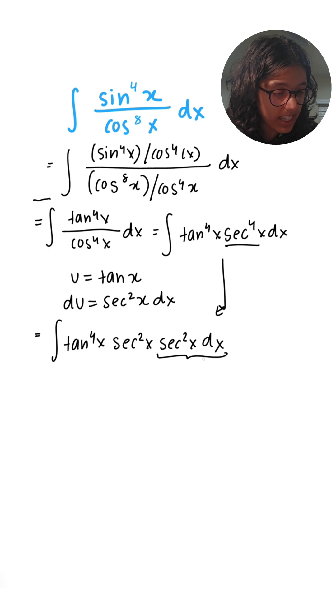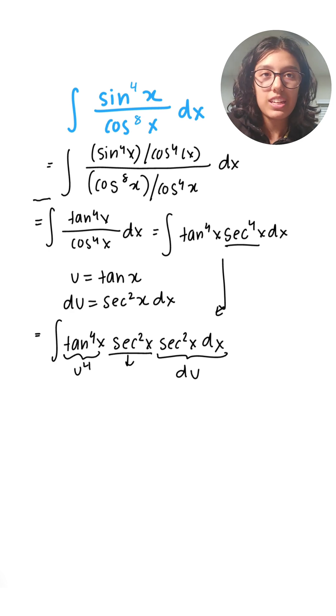Now I notice that this can easily become du over here, but we don't know what this is. This we know—that's just u⁴—but this one we need to convert in terms of tan, and luckily for us there is a trig identity for that.